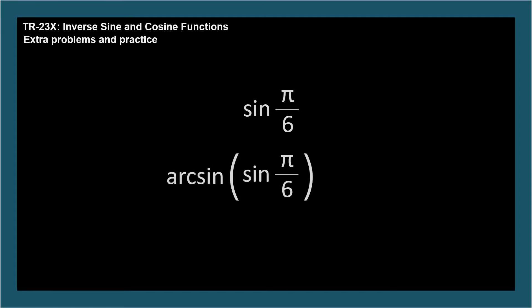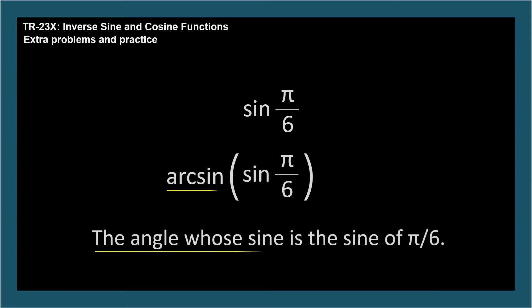So, using our memory aid, this expression means the angle whose sine is the sine of pi over 6. Well, the angle whose sine and the sine of the angle cancel out, just like doubling and halving. So the answer is pi over 6. The angle whose sine is the sine of pi over 6 is pi over 6.